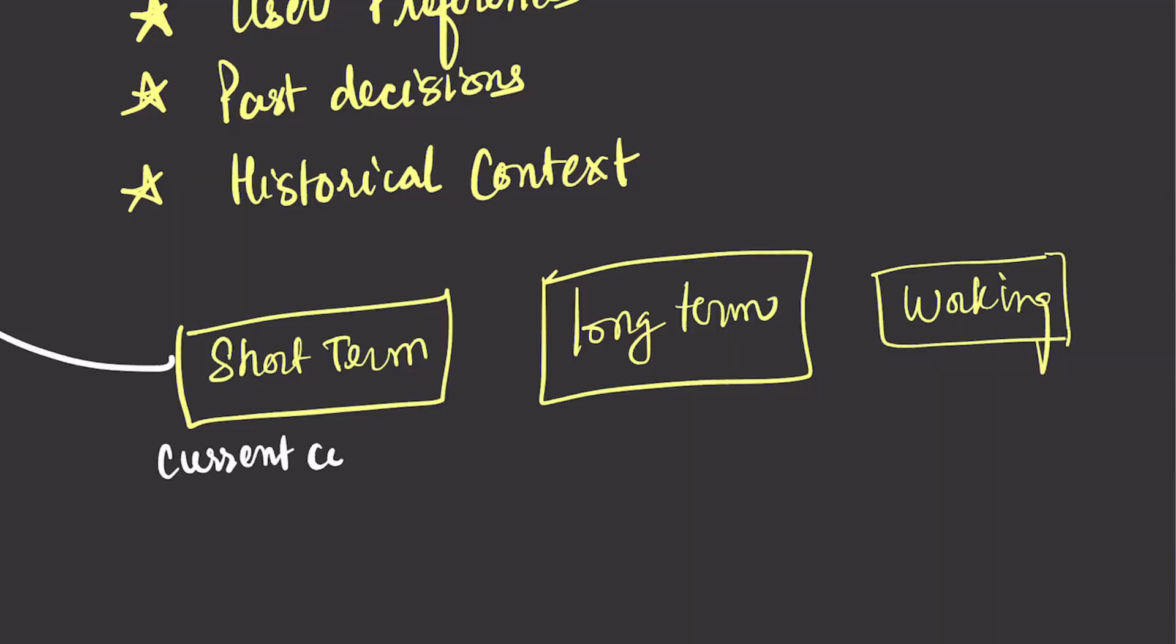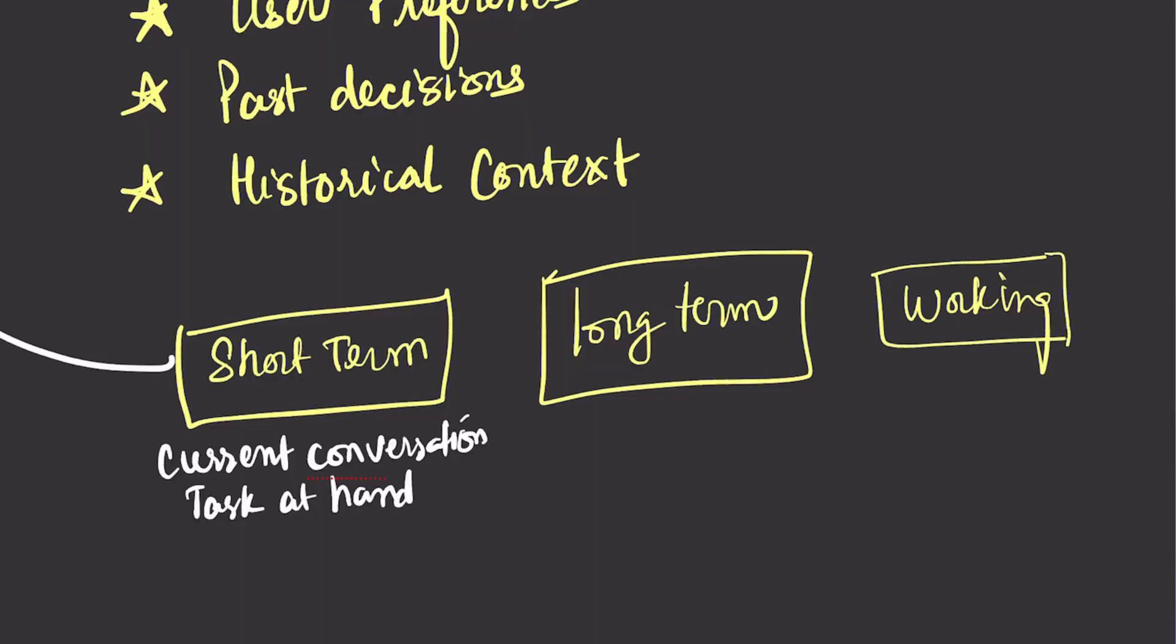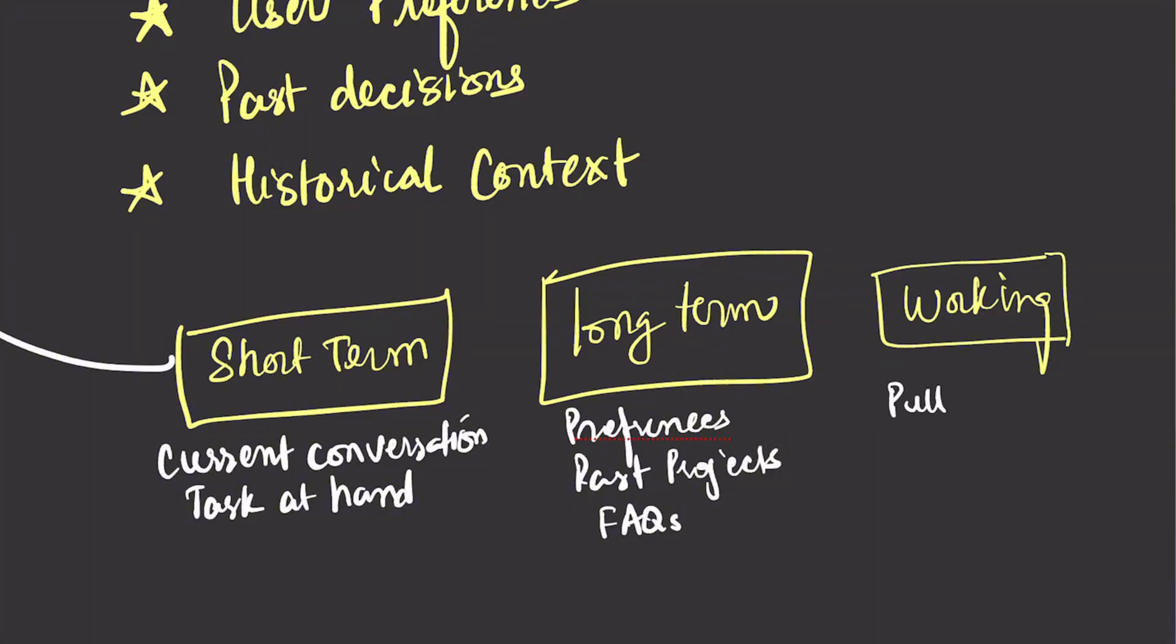There are different types of memory that AI agents can use. There's short-term memory, which keeps track of the current conversation and tasks at hand. There's long-term memory that stores information across multiple sessions, like your preferences, past projects, frequently asked questions, and successful strategies. And working memory is what the agent actively uses during reasoning and decision-making, pulling relevant information from long-term storages when needed. Here's an example. If you tell your scheduling agent once that you never take meetings before 10 a.m., it remembers that preference forever. Three months later, it will still avoid booking early morning meetings. Memory is what transforms a simple tool into an intelligent assistant that actually understands you and your needs.